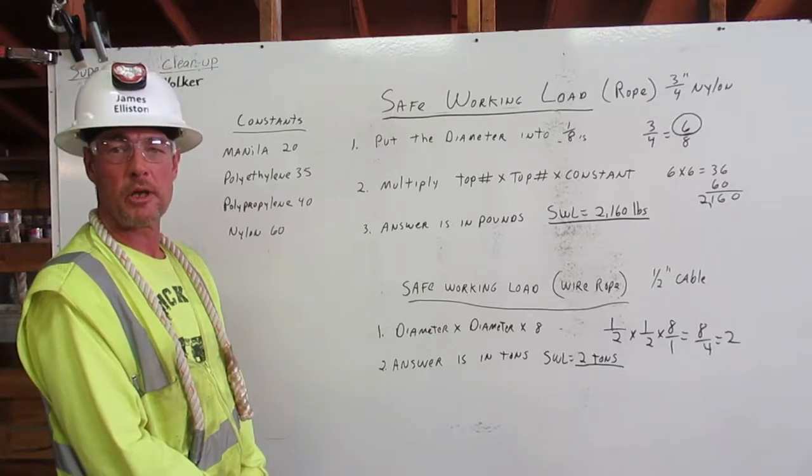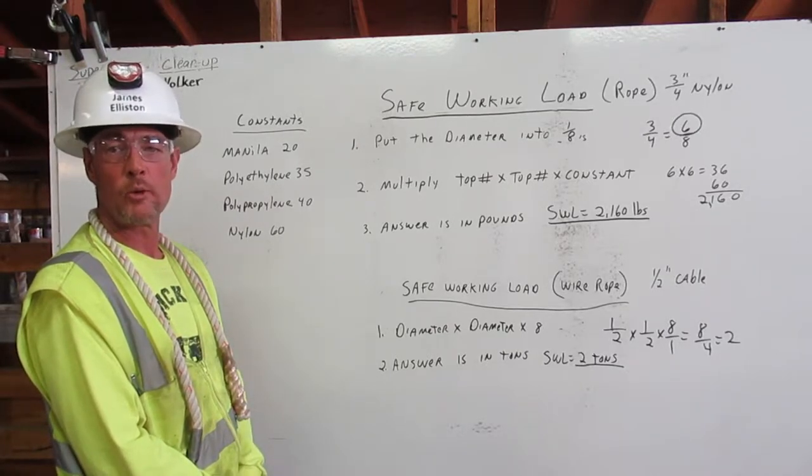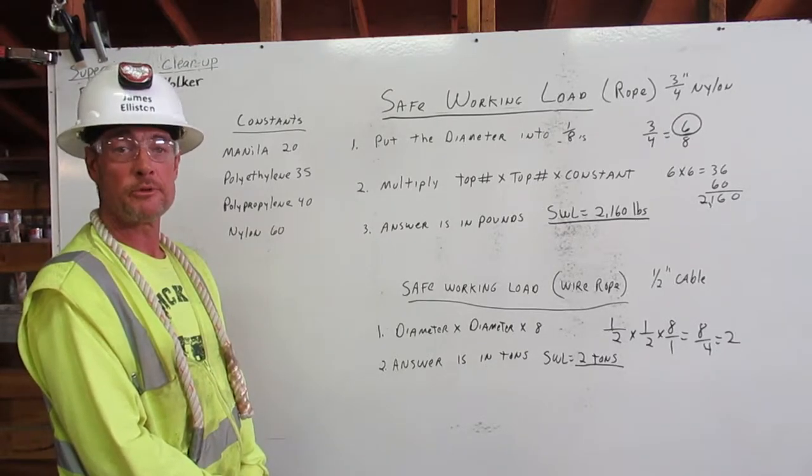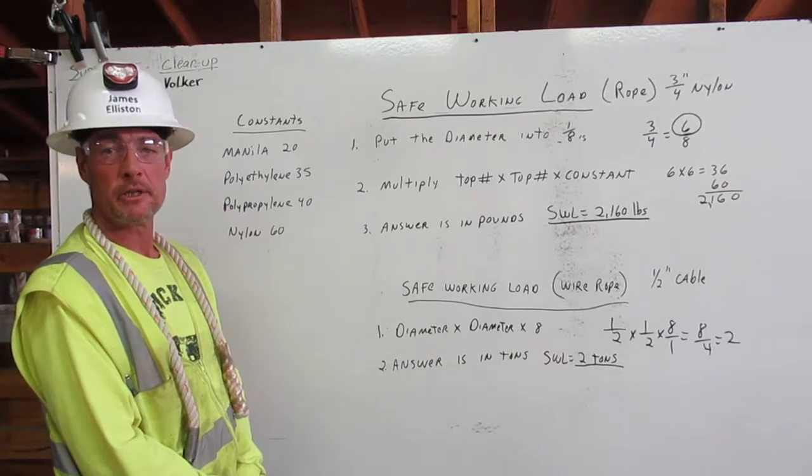I am going to explain how to calculate the safe working load for rope and wire rope rigging. The safe working load is a number that represents one-fifth of the rigging capacity.